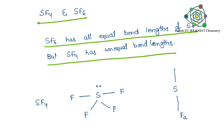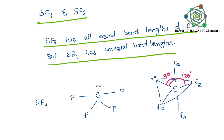SF4 has a seesaw (scissor) shape with one lone pair. Drawing it as a trigonal bipyramidal structure, one equatorial position is occupied by the lone pair. This lone pair is at 90 degrees to the axial fluorines and 120 degrees to the equatorial fluorines. The axial fluorines are more affected, increasing that bond length.